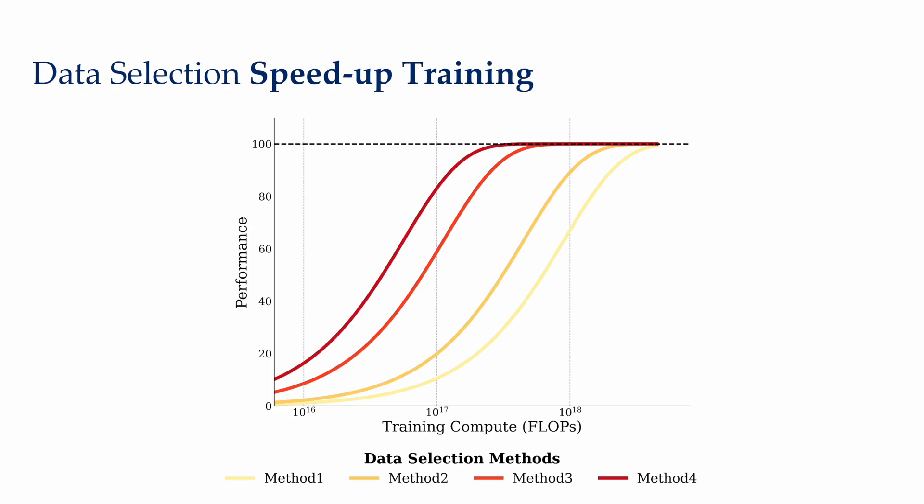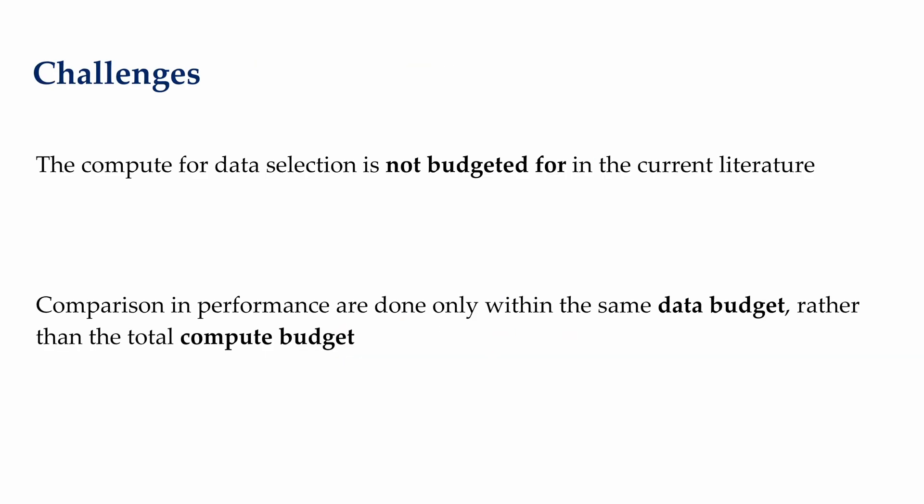Data selection provides tangible benefits in training models. Better data selection methods yield higher data efficiency, which means that models can achieve same performance with less data. Many works have developed really powerful and interesting ways of selecting data. However, choosing the most sophisticated data selection methods might not be the compute optimal choice. A powerful data selection method does not a priori imply that it is compute optimal.